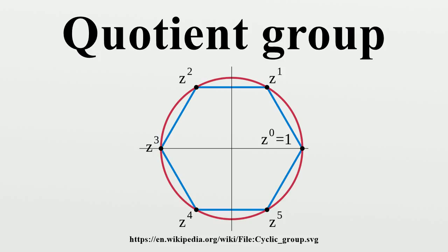A slight generalization: once again consider the group of integers Z under addition, and let n be any positive integer. We consider the subgroup nZ of Z consisting of all multiples of n. Again nZ is normal in Z because Z is abelian. The cosets are nZ, 1+nZ, 2+nZ, ..., (n-1)+nZ. An integer k belongs to the coset r+nZ, where r is the remainder when dividing k by n. The quotient Z/nZ can be thought of as the group of remainders modulo n, and is a cyclic group of order n.